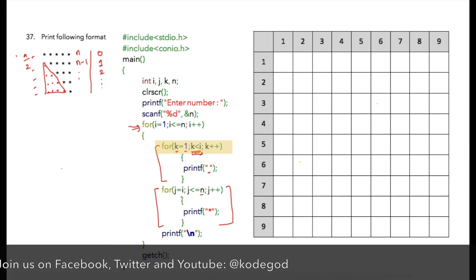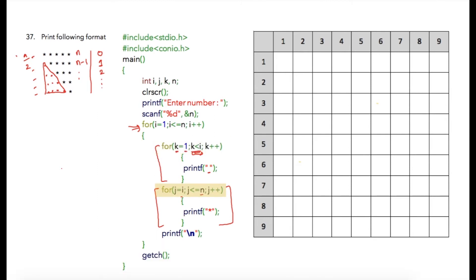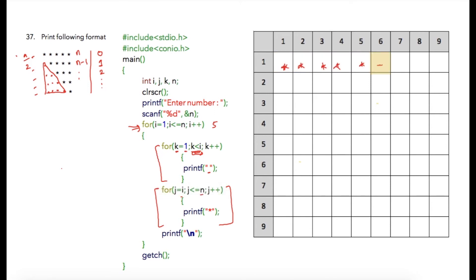Let us see what happens on the output screen assuming the user has entered 5. The main loop executes 5 times starting from 1 to 5. In the first iteration i is 1, the space loop condition is false so nothing prints, then the star loop initializes j to 1 and checks 1 less than or equal to 5, printing 5 stars. Once this loop completes, a newline character moves the cursor to the next line.